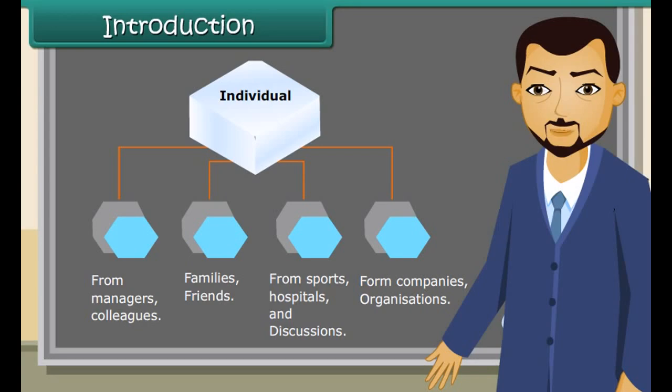Types of data: Primary data and secondary data. Data which are not originally collected but obtained from published or unpublished sources are called secondary data.